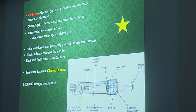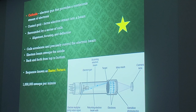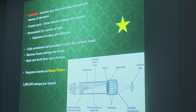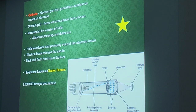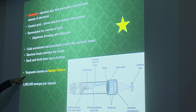The electron gun provides a continuous stream of electrons aimed at the target. The cathode is surrounded by coils that accelerate and precisely control the electron beam. The electron beam goes toward the target in a special sweeping zigzag motion from top to bottom known as the raster pattern — approximately one million sweeps per minute.